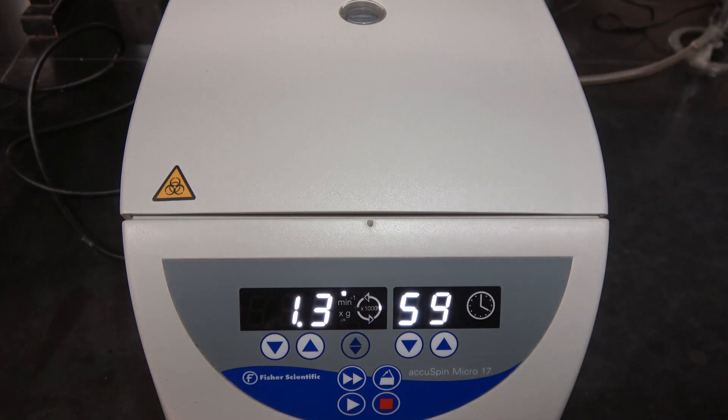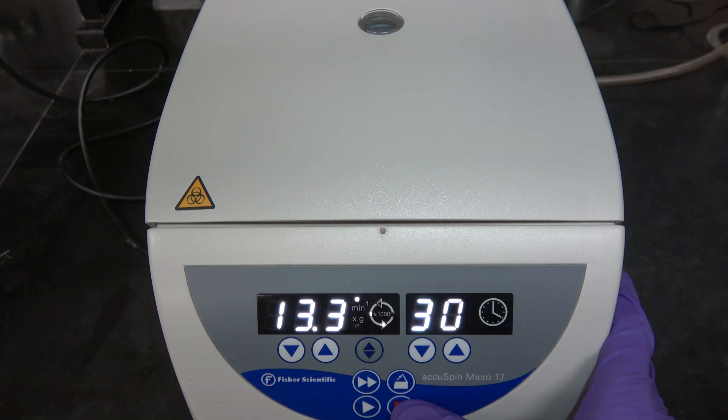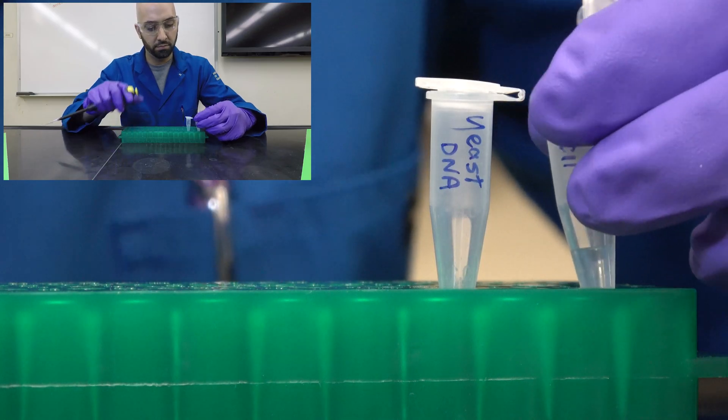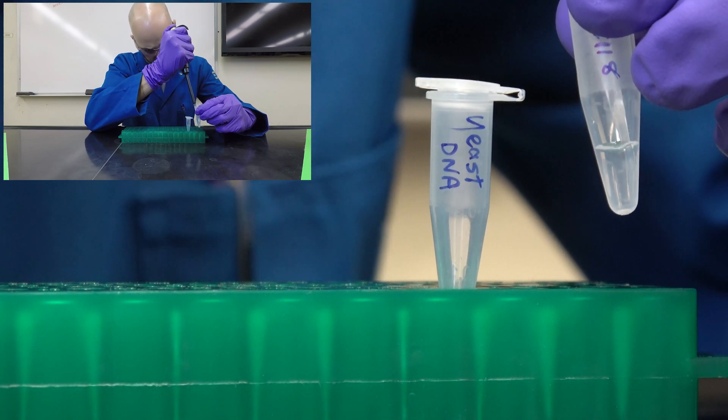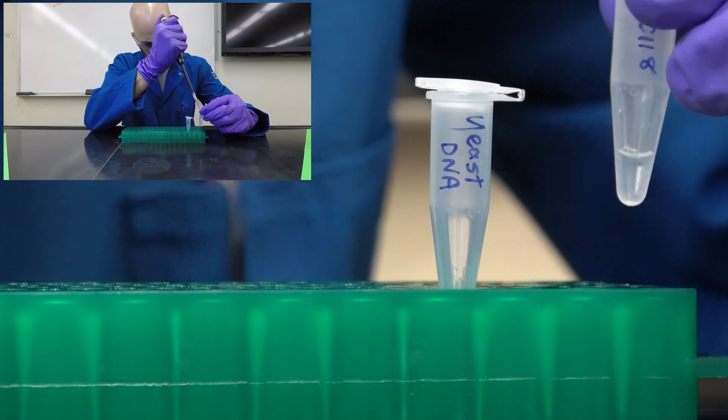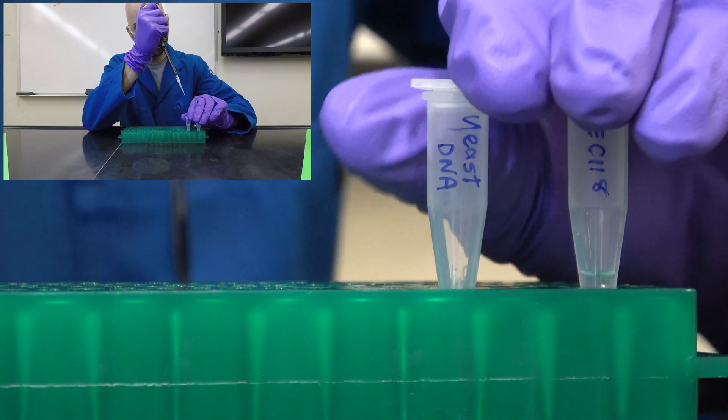One more centrifugation for 30 seconds at max speed. We'll set for 1 minute and hit stop after 30 seconds. At the bottom, we've pelleted any unwanted products so we want to take 100 microliters from the supernatant without disturbing the pellet.